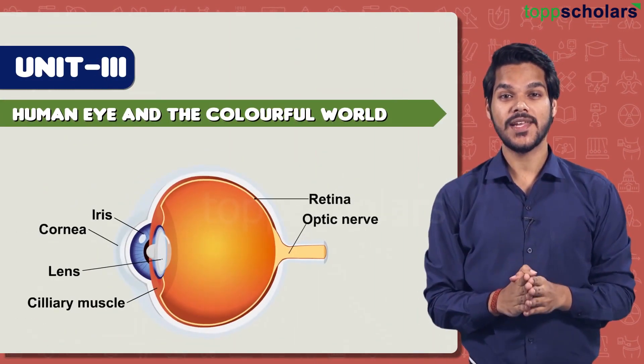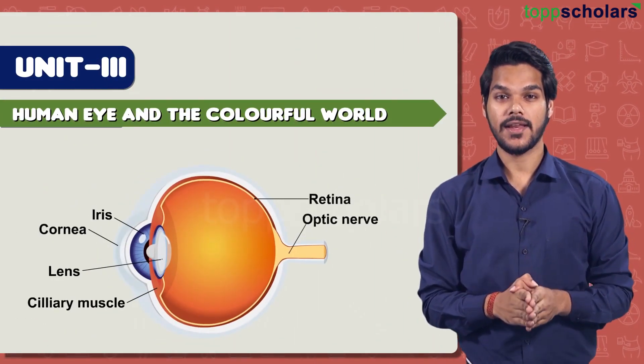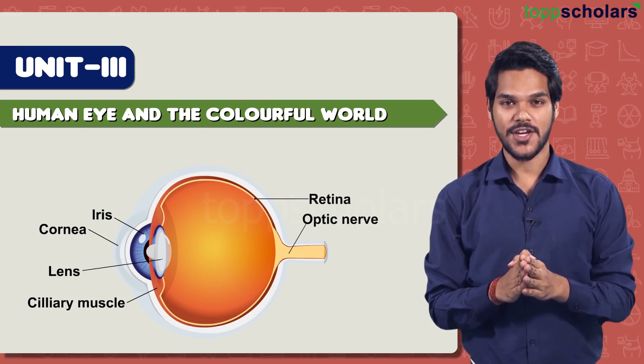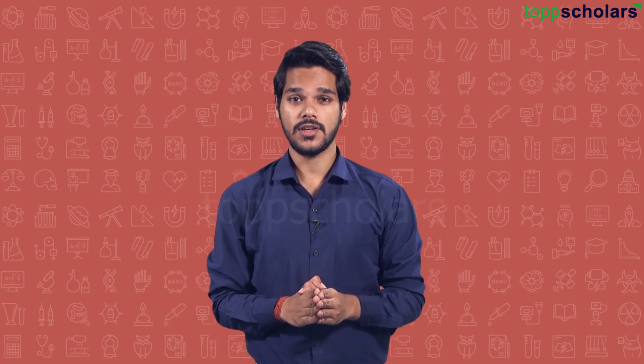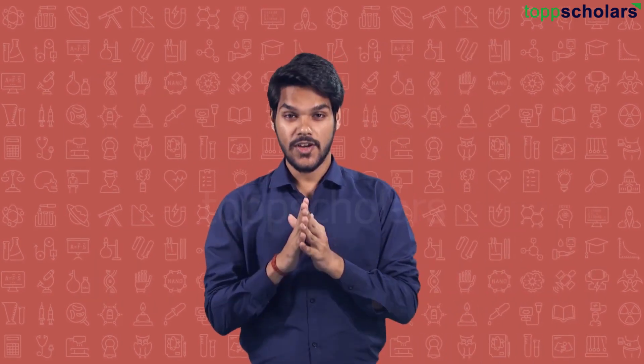The next chapter is the Human Eye and the Colourful World. From this chapter you can expect questions based on natural phenomena caused by refraction of light, for example atmospheric refraction and its explanation. You can also expect situation-based questions mostly dependent on defects of the human eye, where a situation is given and you have to provide a solution.